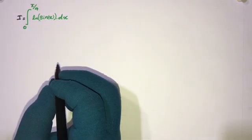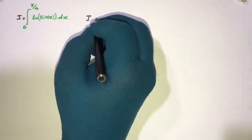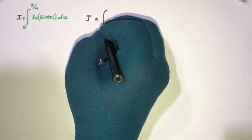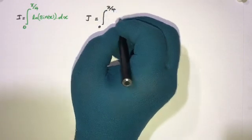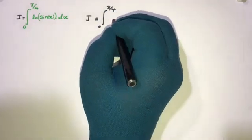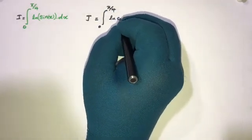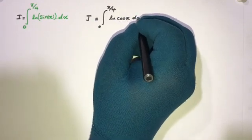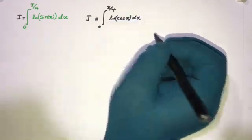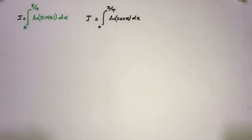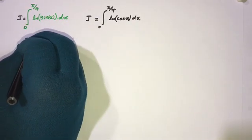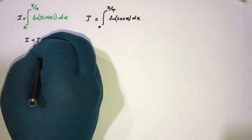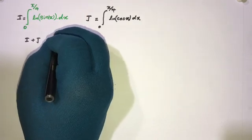I will call this integral I. Now I am going to define an auxiliary integral J equal to the integral from 0 to π/4 of the natural log of cosine of x dx. Now we can take I plus J.